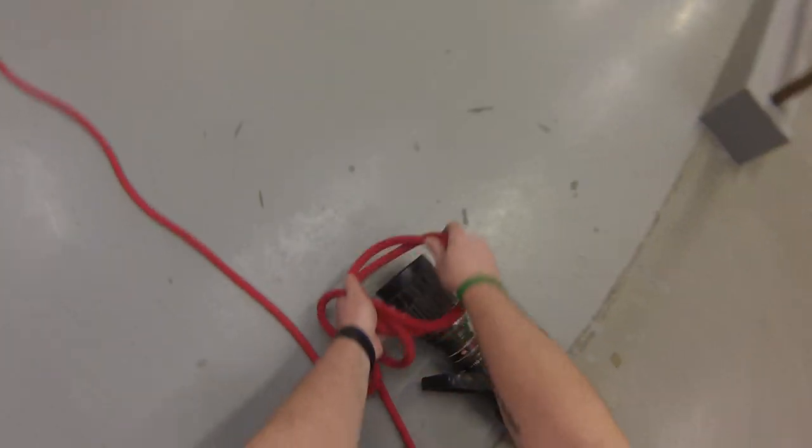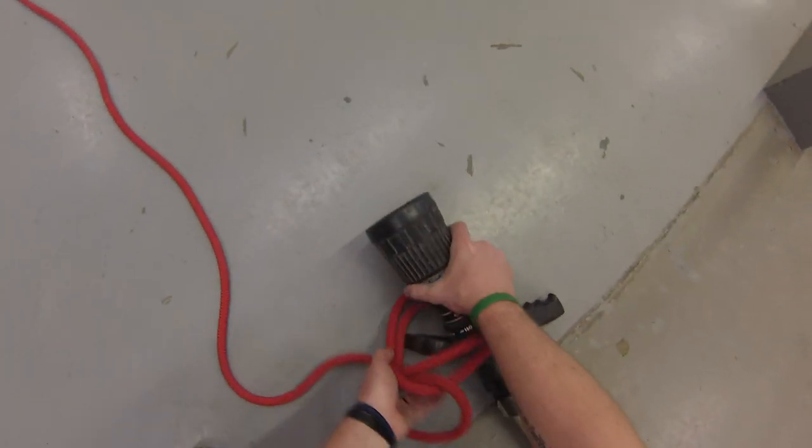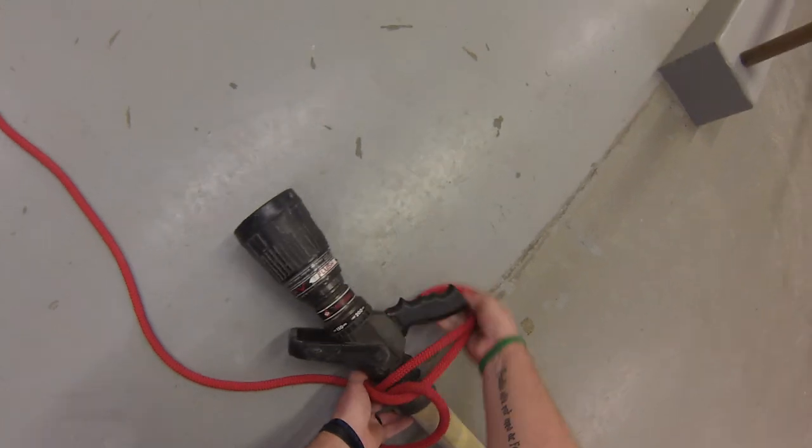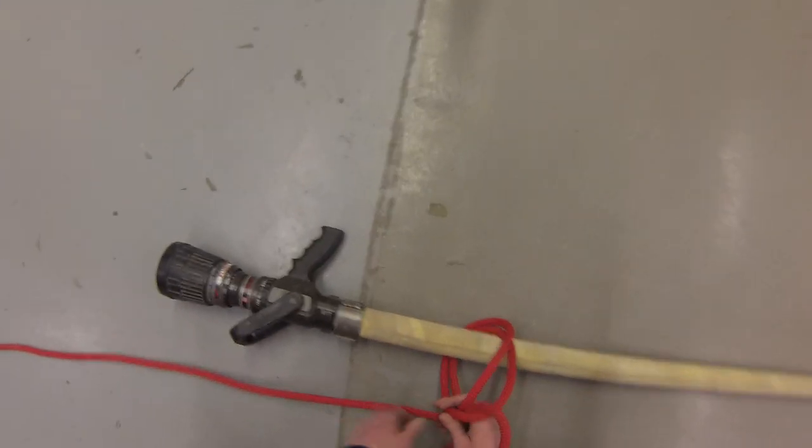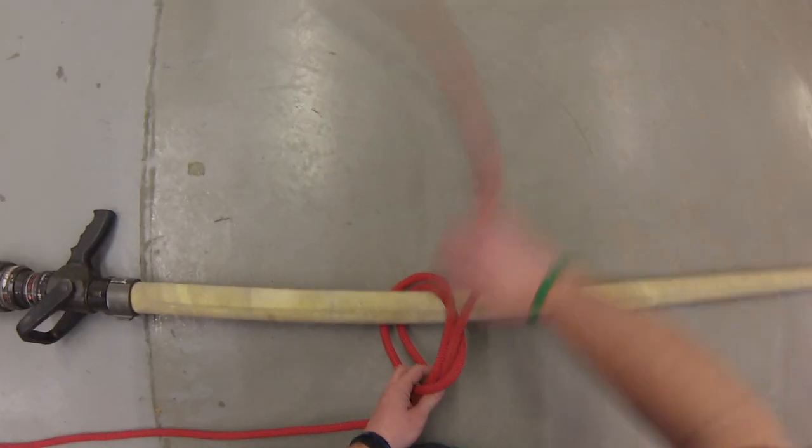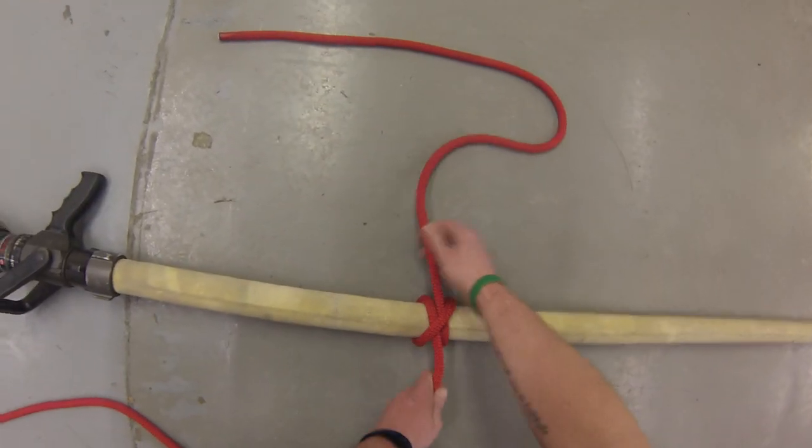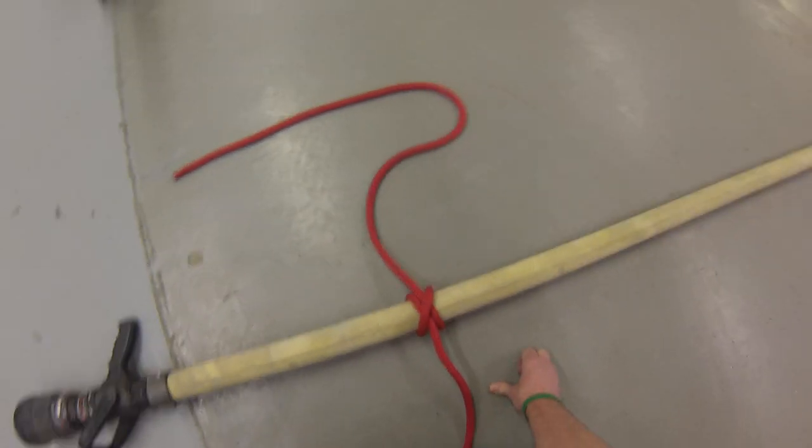So now I have my clove hitch tied. I'm just going to slide it over the nozzle, over the bail, around the pistol grip, down a foot past the coupling. I can sink my clove hitch down now, we've got it tight enough.